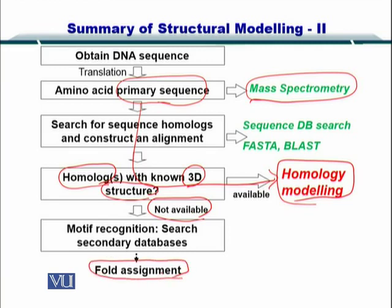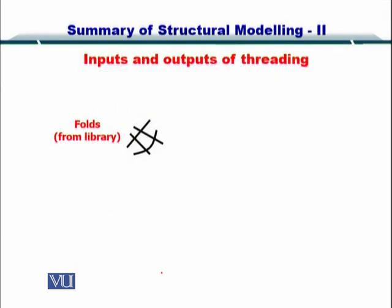This different strategy is called fold assignment. If you cannot find complete protein structures having similar sequences to your sequence, then you have to move to fold recognition. In fold recognition, you start by looking at folds from the library, and these folds are then investigated individually for the possibility of being formed by the amino acid sequence.